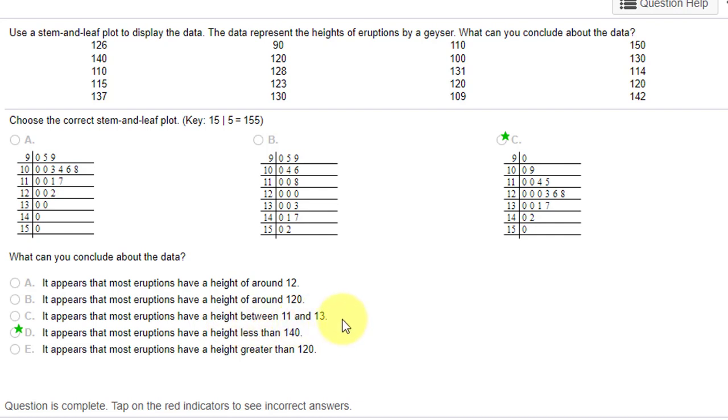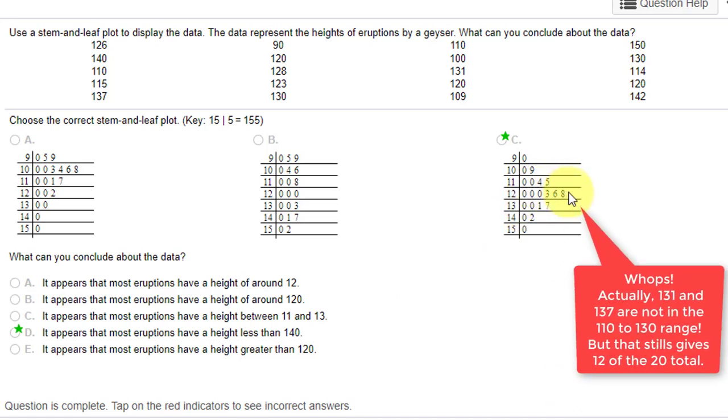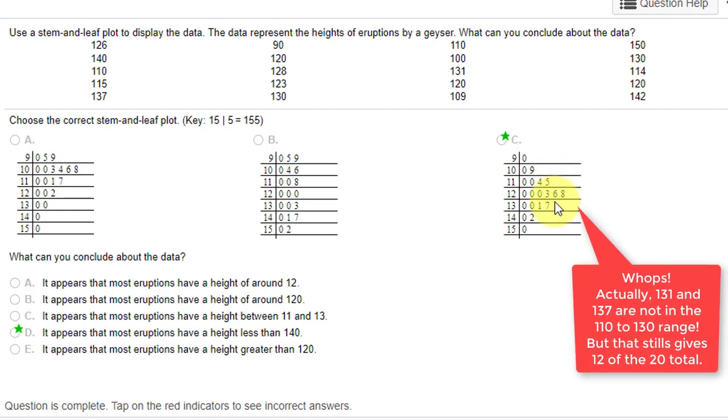and 13, and again that's wrong on the surface because that's 110 to 130. If they had said between 110 and 130, then you could make an argument that's correct because there's four, eight plus six—fourteen eruptions in those three stems. That would be correct, but they said 11 and 13, which is wrong. It appears